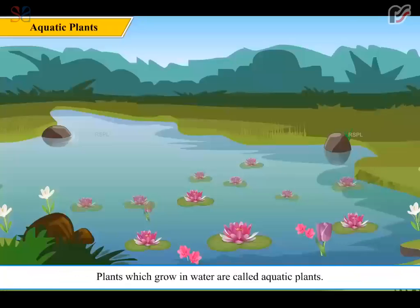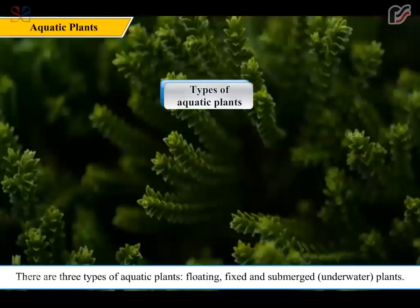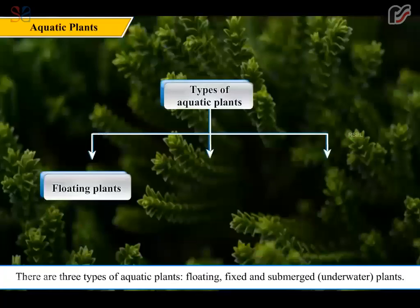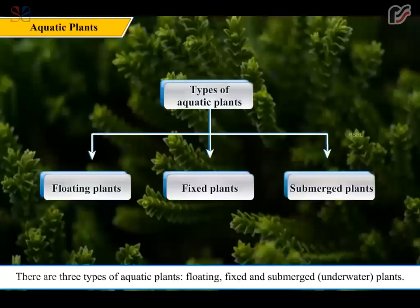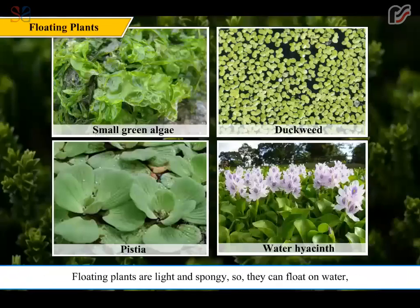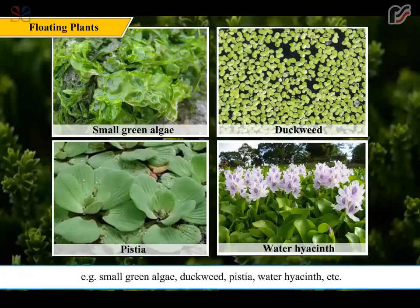Plants which grow in water are called aquatic plants. There are three types of aquatic plants: floating, fixed, and submerged underwater plants. Floating plants are light and spongy, so they can float on water. Examples include small green algae, duckweed, Pistia, and water hyacinth.